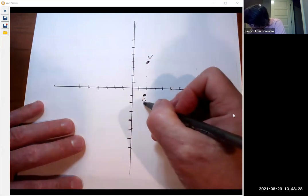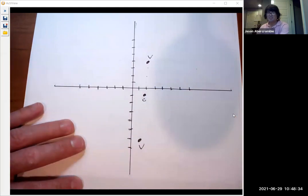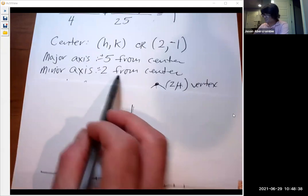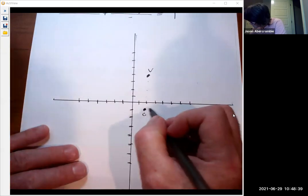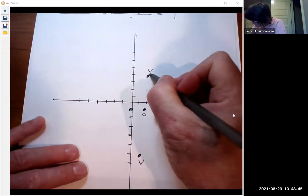Go down one, two, three, four, five. Put a V there for my vertex. The minor axis went plus and minus two from the center. We're going to go right two and left two. We kind of draw that in again.